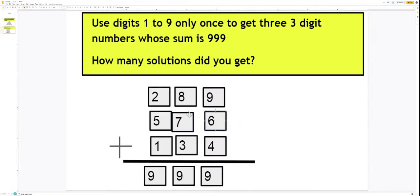Now you tell me what is the sum. Just think, 9 plus 6, 15 plus 4, 19, 1 carry. 8 plus 1, 9. 9 plus 7, 16 plus 3, 19, 1 carry. 2 plus 1, 3 plus 5, 8 plus 1, 9. Isn't it interesting?